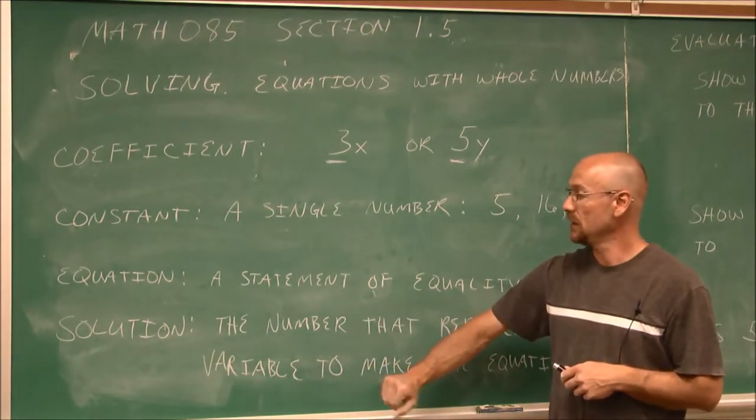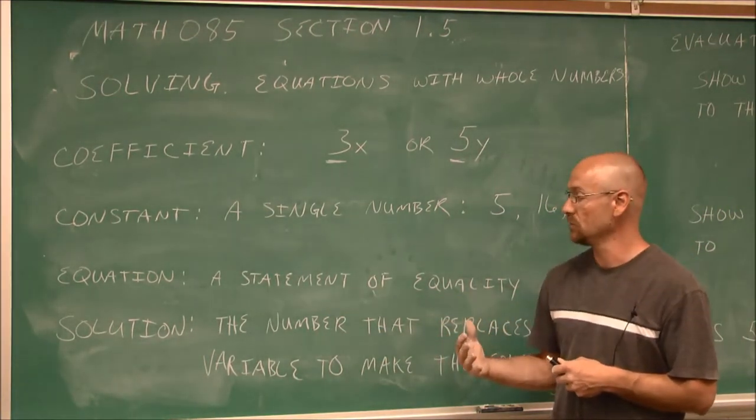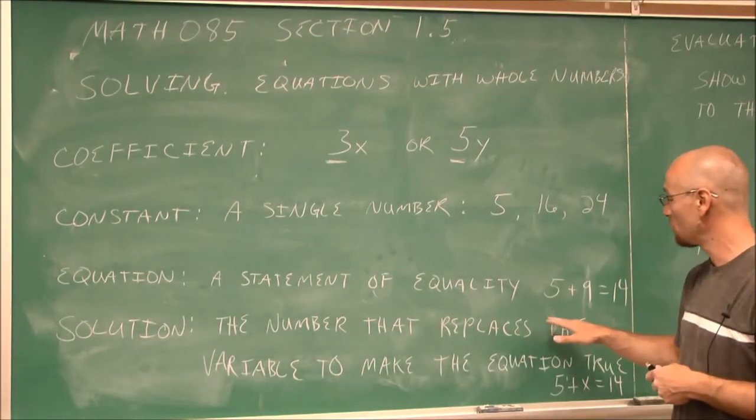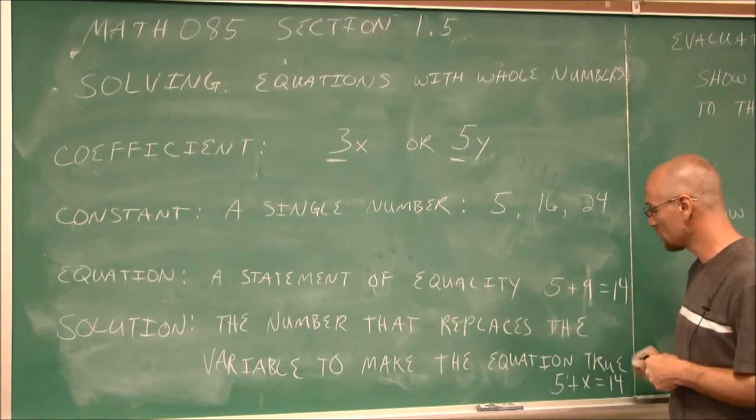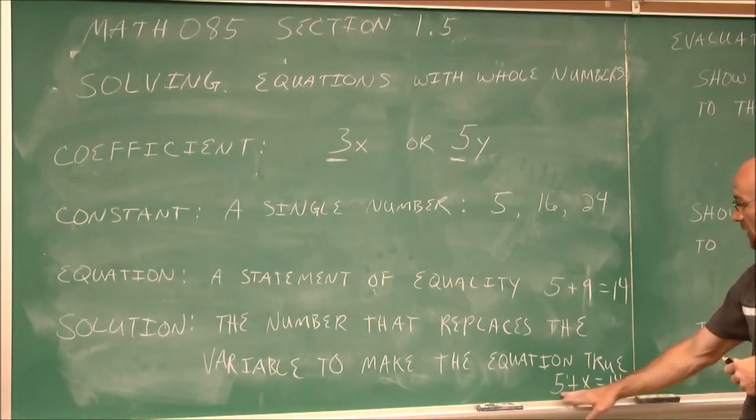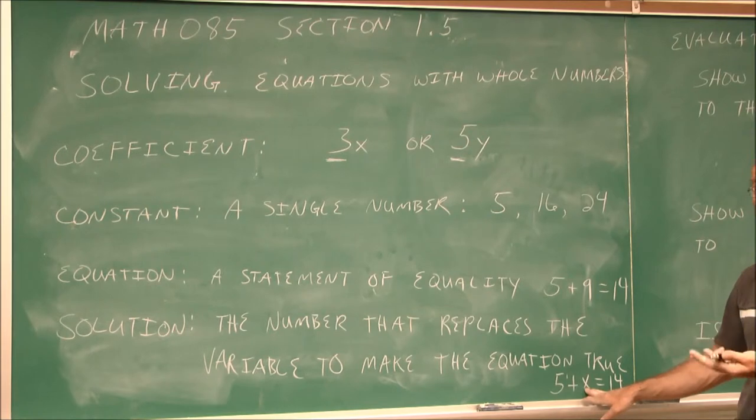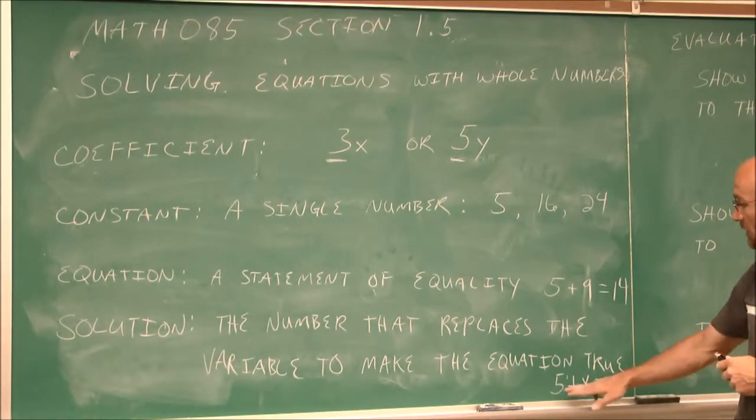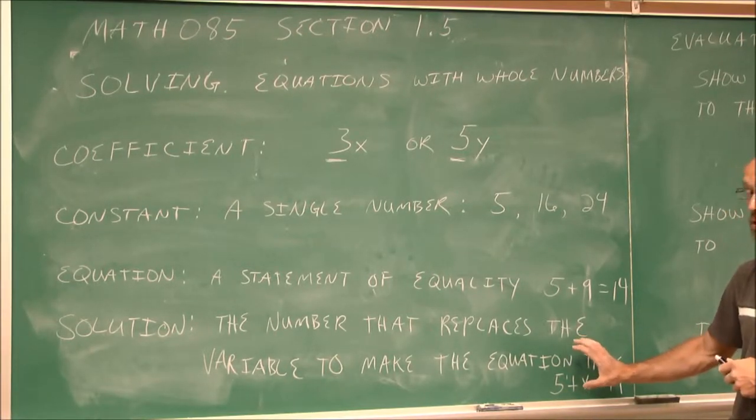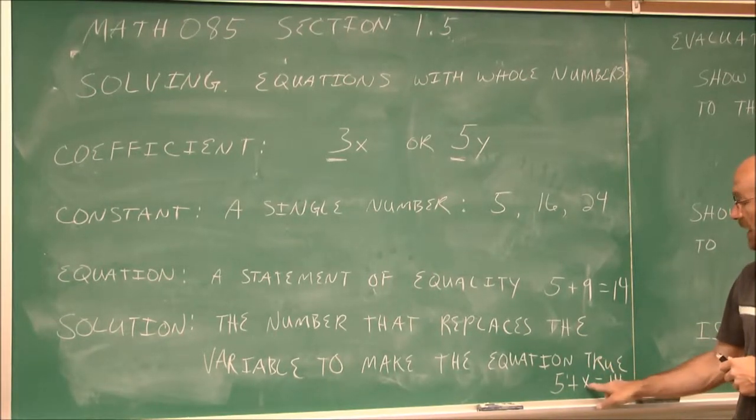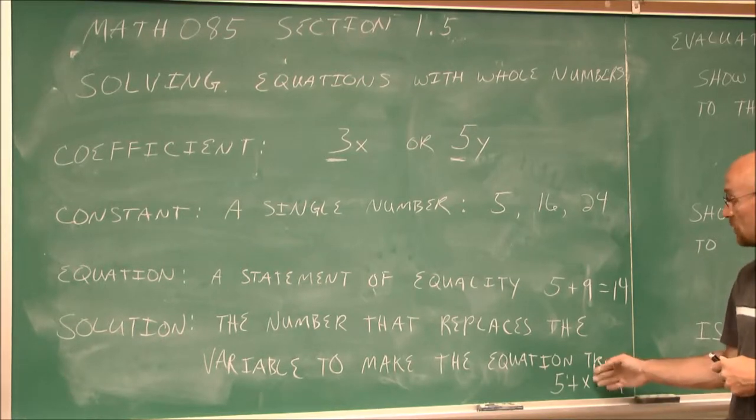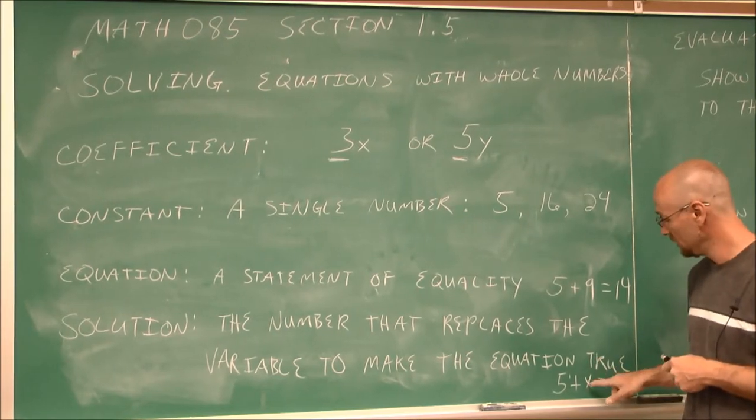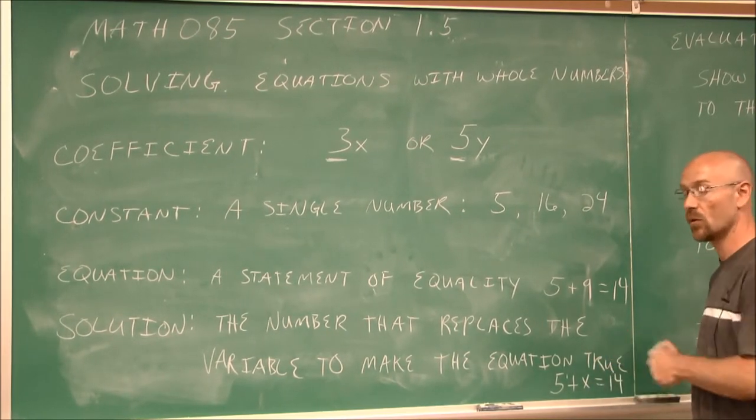A solution is when we have a variable in an equation. And the solution is defined as the number that would replace the variable to make the equation true. If you look at the example I have here, I have 5 plus something x equals 14. x has to be 9 because 5 plus 9 is 14. So the solution, by definition, is x equals 9 because that would make this a true statement. So the solution is the value that is equal to our variable, the value we're going to replace in there.